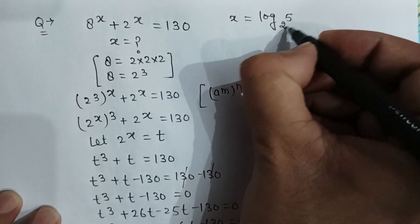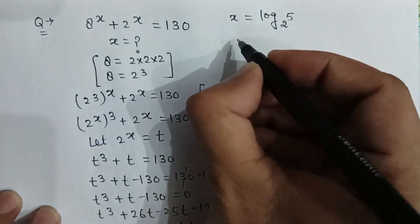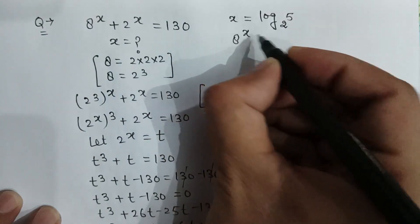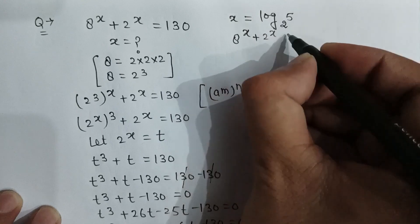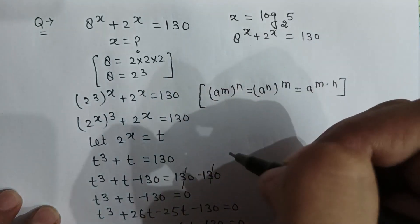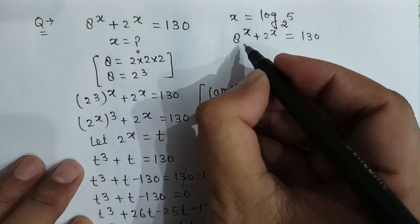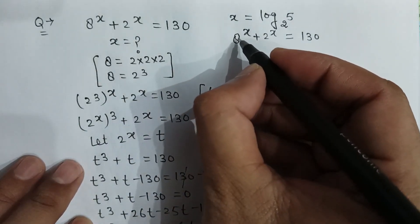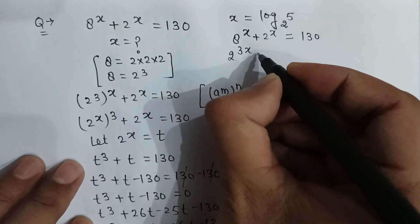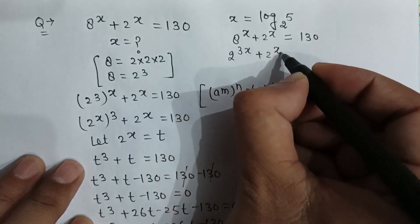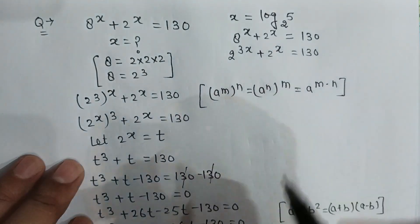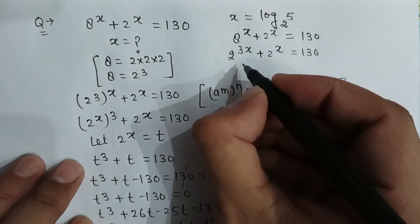To check: if x equals log base 2 of 5, then 8 to the power x plus 2 to the power x equals 130. This can be rewritten as 2 to the power 3x plus 2 to the power x equals 130.